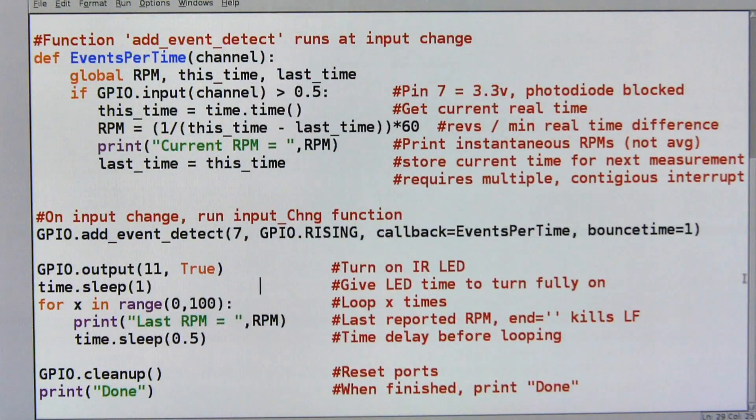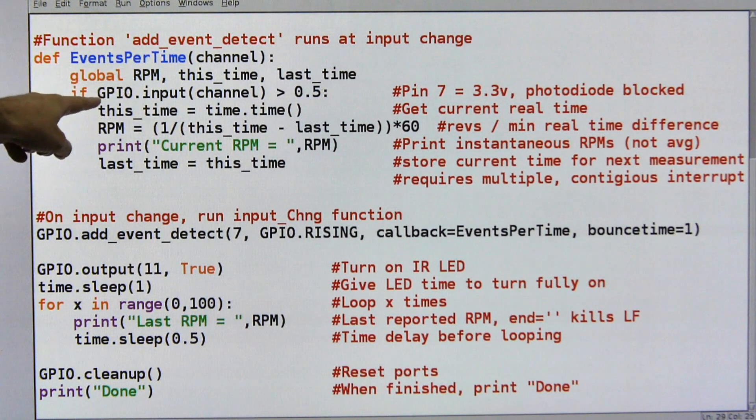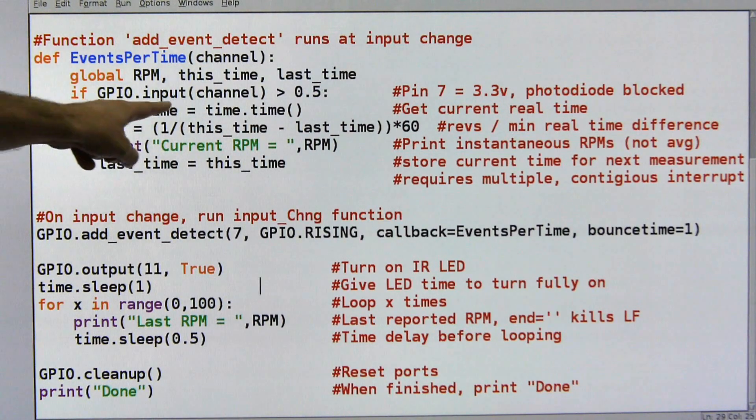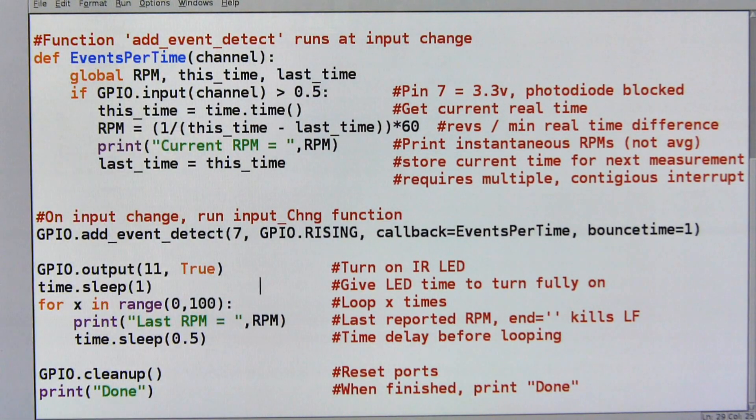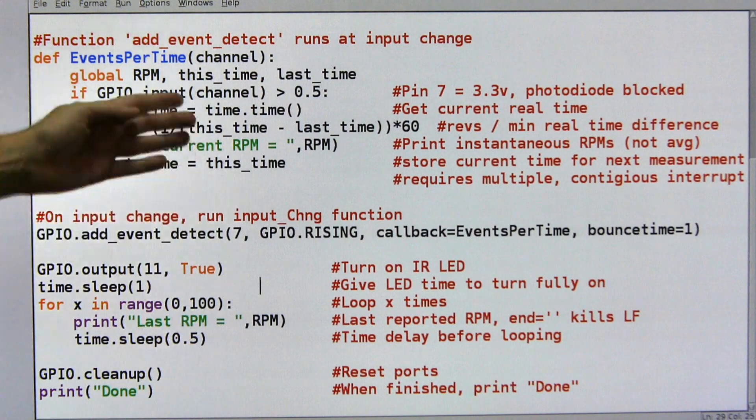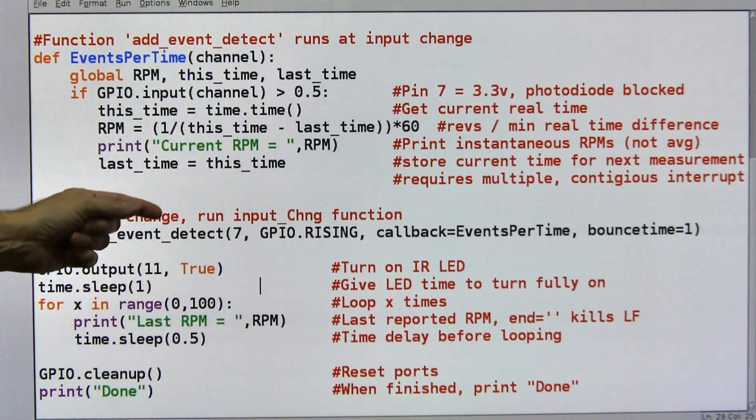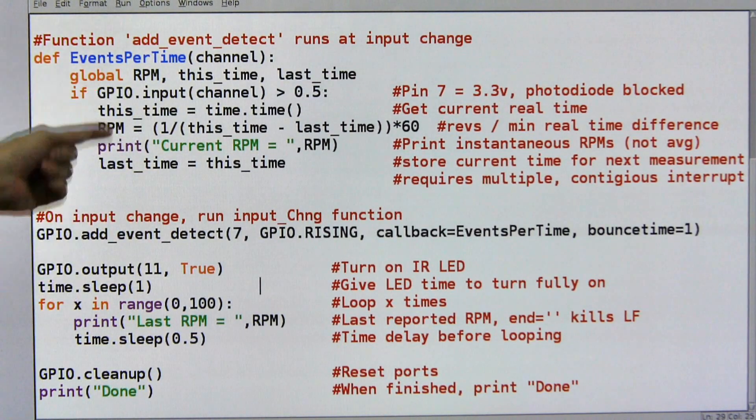This is the routine that I'm going to call when I hit the interrupt, when something happens, when something changes on the input pin. This is the routine I'm going to call, again very similar to other programs. And it's called events per time, I globalized a lot of the variables. If the input channel is less than 0.5, in other words, if the photodiode is blocked, then I want to do this stuff. And the first thing I want to do is I want to keep track of the current time, the time right now when this event happened.